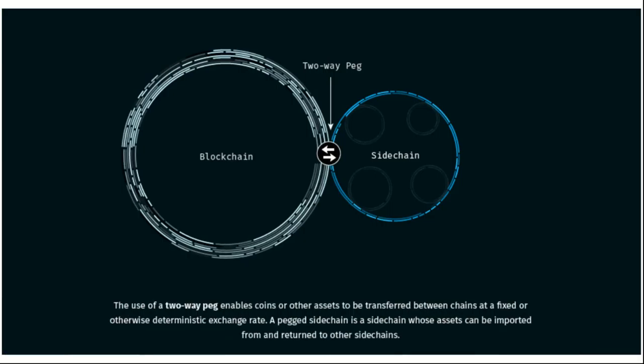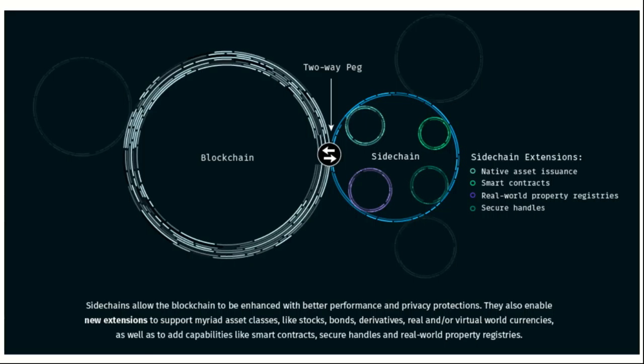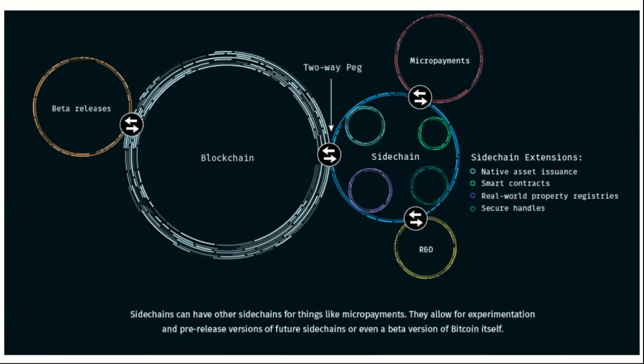The use of a two-way peg enables coins and other assets to be transferred between chains at a fixed or otherwise deterministic exchange rate. A pegged sidechain is a sidechain whose assets can be imported from and returned to other sidechains. Sidechains allow the blockchain to be enhanced with better performance and privacy protections. They also enable new extensions to support myriad asset classes such as stocks, bonds, derivatives, real and virtual world currencies, as well as capabilities like smart contracts, secure handles, and real-world property registries. Sidechains can have other sidechains for things like micropayments, and they allow for experimentation and pre-release versions of future sidechains or even a beta version of Bitcoin itself.